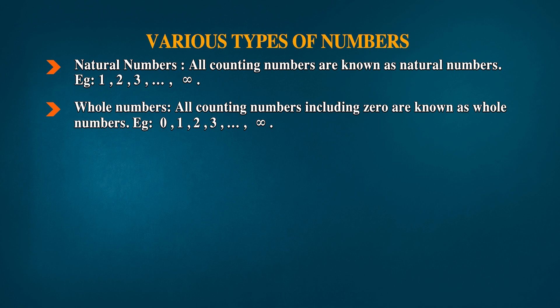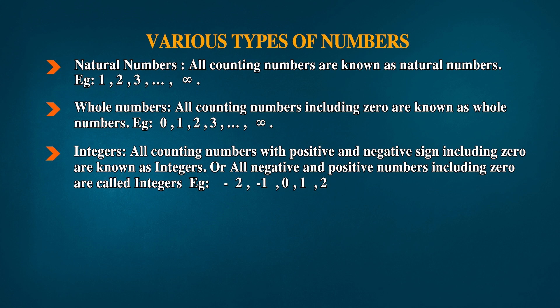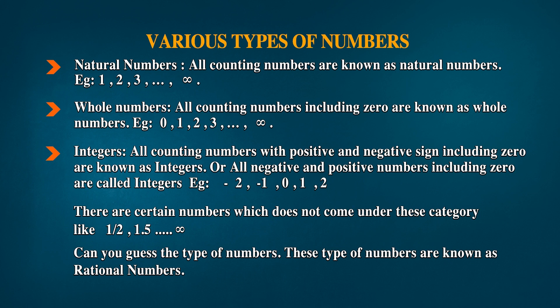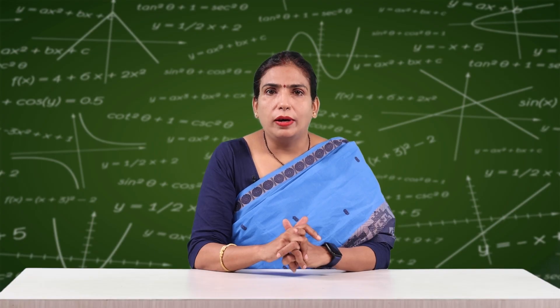As our journey proceeded, we came across negative numbers too. We kept them in our journey bag, now named integers. All positive and negative numbers including zero are known as integers: ...-2, -1, 0, 1, 2... up to infinity. After some time we found certain numbers that do not come under these categories — like -1/2, 1.5, 2/3. Can you guess what these numbers are? This leads us to the collection of rational numbers.